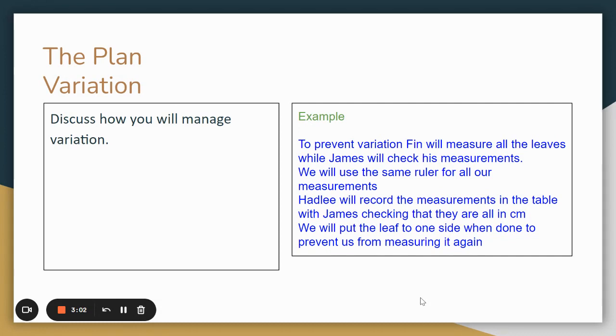Hadley's going to record all the measurements in the table and James is going to check that they're all done in centimeters so we don't change that halfway through. We'll put the leaf to one side when we're done to prevent us from measuring it again.